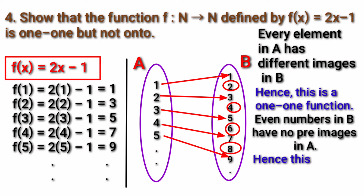For a one-one function, we want to see the first set A — there should be different images in B. And for an onto function, we want to see the second set B — there should be a pre-image for all the elements in B.